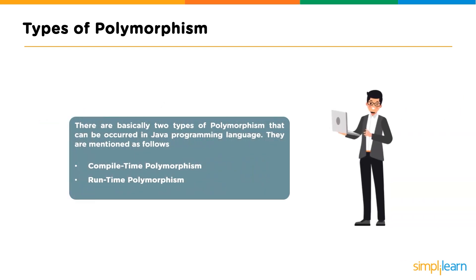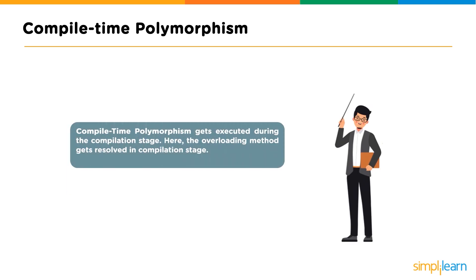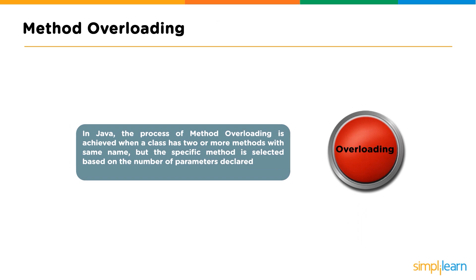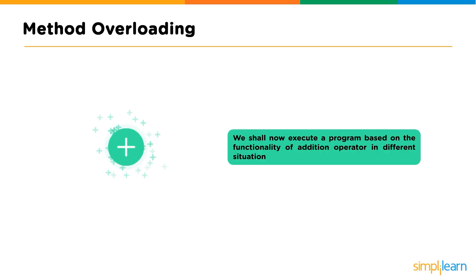Types of polymorphism. There are basically two types of polymorphism in Java: compile time polymorphism and runtime polymorphism. Compile time polymorphism gets executed during the compilation stage — the overloaded method gets resolved at compile time. In method overloading, a class has two or more methods with the same name, but the specific method is selected based on the number of parameters declared.